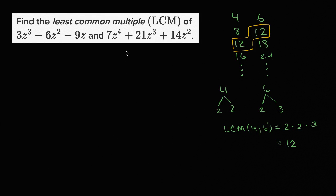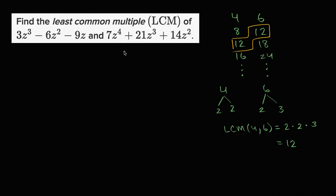When we think about least common multiples for polynomials, it's essentially the same idea. We look at the factors and say the LCM needs to contain the factors of both, but it shouldn't contain more than that. You can always find a multiple of two polynomials by just multiplying them, but we want the least common multiple. So let's factor each of them.